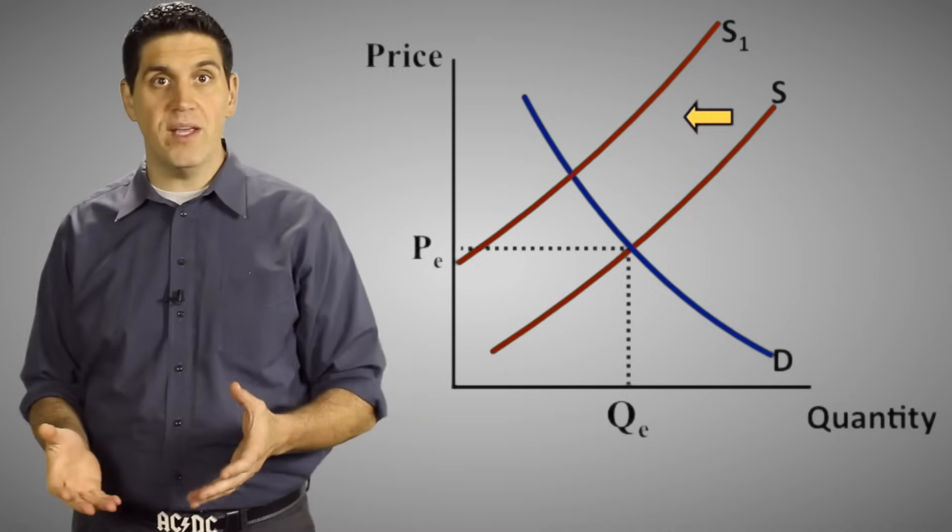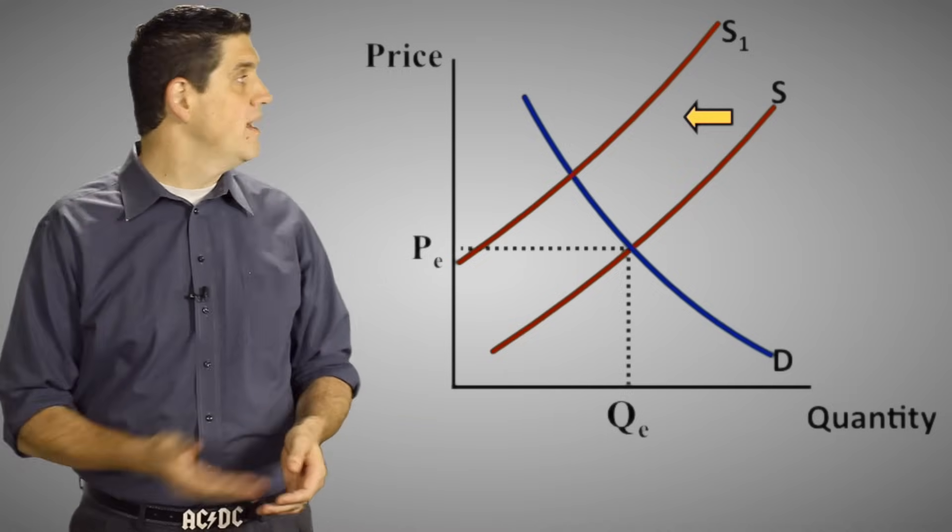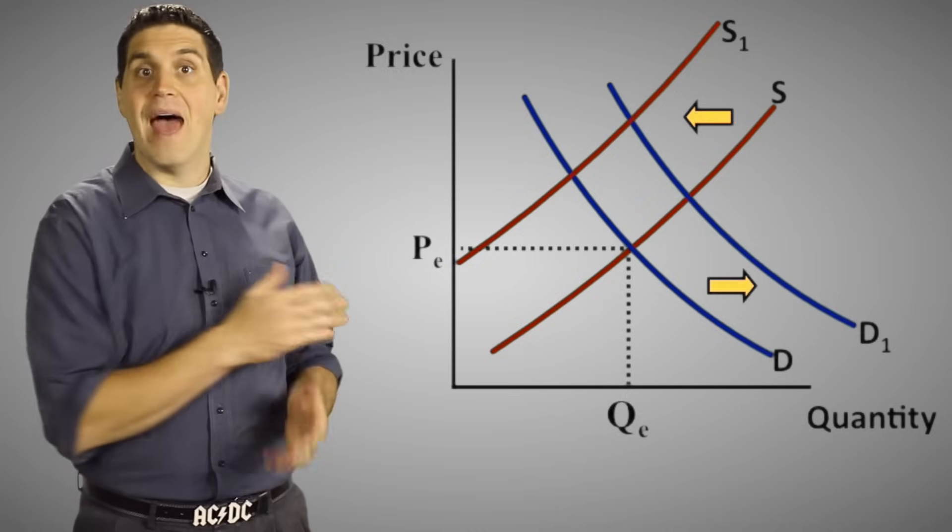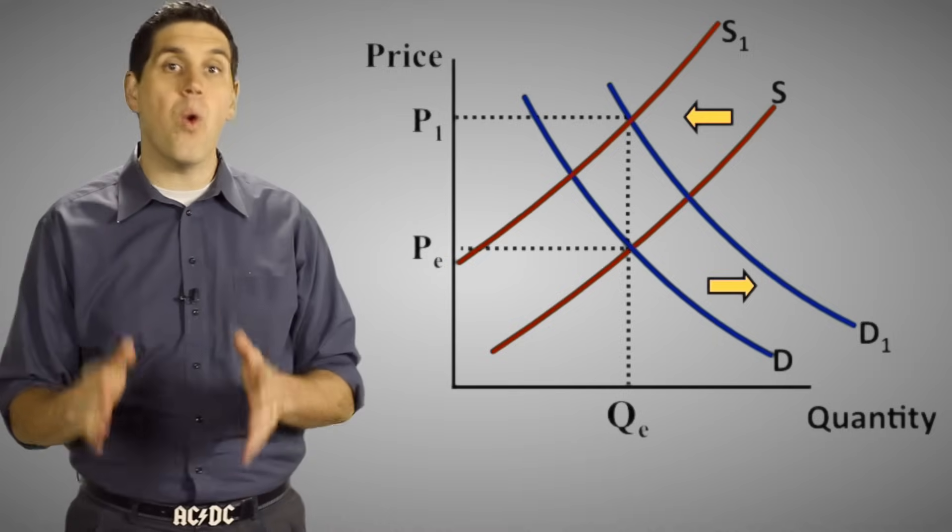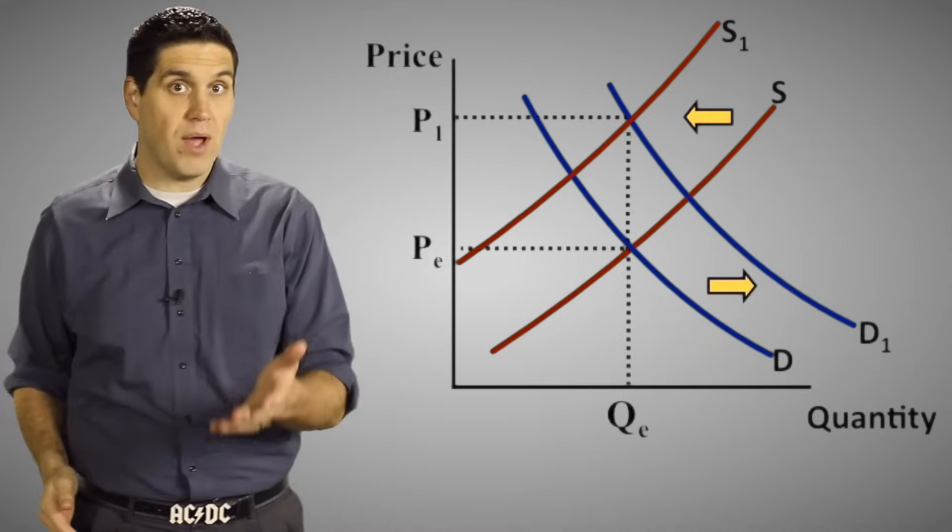If the price goes up for a key resource, then the supply is going to decrease. That means it's going to shift to the left. At the same time, demand goes up, shifts to the right. So the price is going to go up, for sure, and the quantity is indeterminate. Is that what you got?